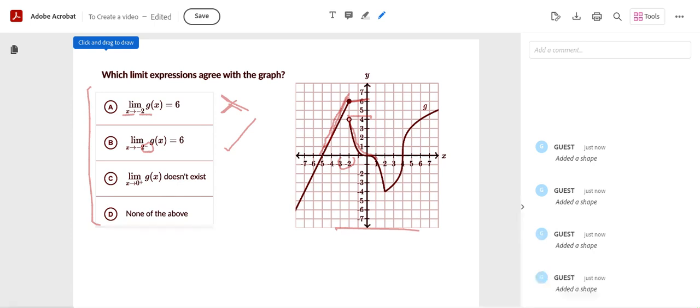Now we can look at C. And we already know D is wrong because B is correct. So you can cancel that out. The limit as x approaches 0 from the right, as you can see with this plus sign, of function g of x doesn't exist.